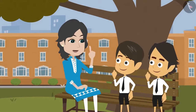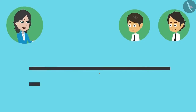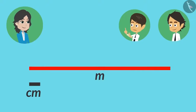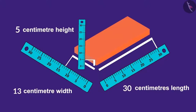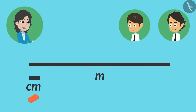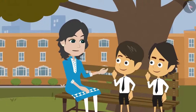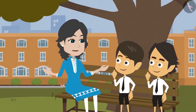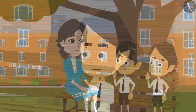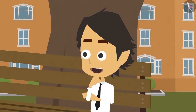Different units of measurement are required because lengths are different. Centimeter is very small, therefore it is used to measure small lengths. But to measure bigger lengths, meter is used. We measured a break in centimeters. Can we measure a break in meters too? No, a break is small therefore it cannot be measured in meters. Only those objects whose length is more than 100 centimeters are measured in meters.